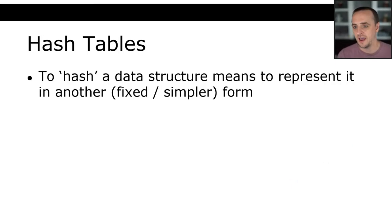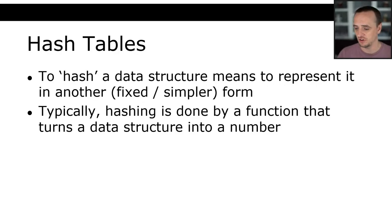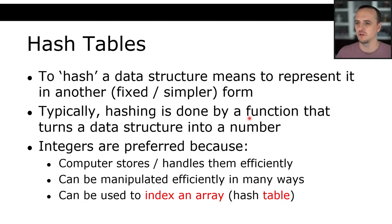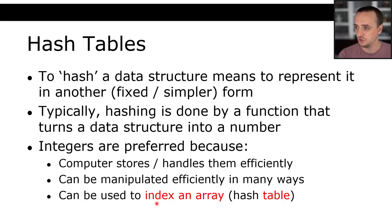To hash a data structure means to represent it in another format — typically a fixed-size or simpler format. Hashing is done by a function that turns data into another form, and the output is typically an integer. Computers store and handle integers very efficiently — no rounding errors like floats or doubles — and they can be manipulated efficiently with arithmetic. Most importantly, an integer can be directly translated into the index of an array, which is exactly what a hash table is.